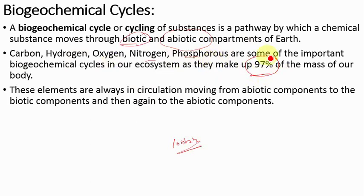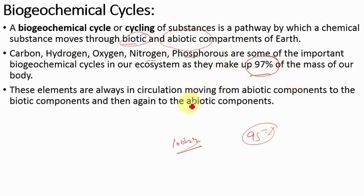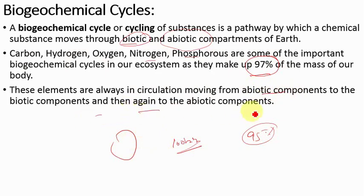In addition, these minerals make up 97% of our body mass, and if we consider the mass of all living organisms, then 95% of the mass of the entire living world is constituted by these minerals. These elements are always in circulation, moving from abiotic components to biotic components and then again to abiotic components — that is the biogeochemical cycle.